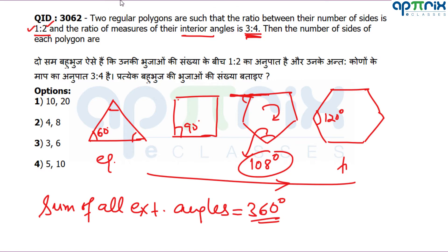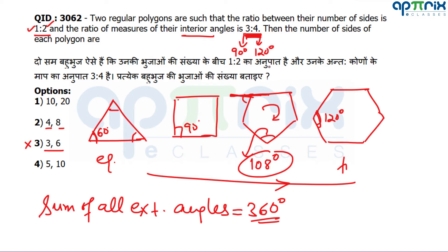Orally, let's check options. If sides are 3 and 6: angles are 60 and 120, ratio is 60:120 = 1:2, not 3:4 — this option is not possible. If sides are 4 and 8: the square has interior angle 90. For an octagon I need 3:4 ratio, so the other angle would be 90×(4/3) = 120, which is the hexagon, not an octagon — this option is also not possible.